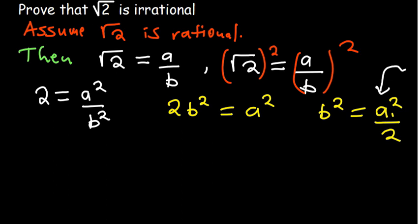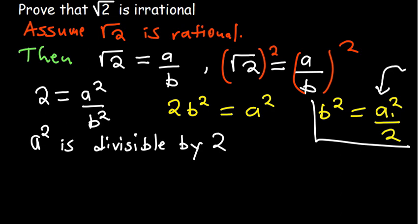I can give you an example. If you have 4 squared and I tell you that 4 squared is divisible by 2, then it means even the number itself is divisible by 2. 4 itself is divisible by 2. So that expression shows that A squared is divisible by 2. Hence, A is also divisible by 2.